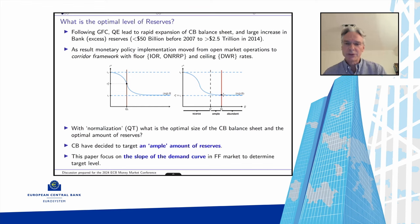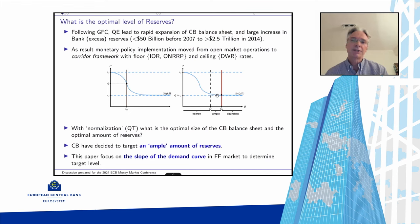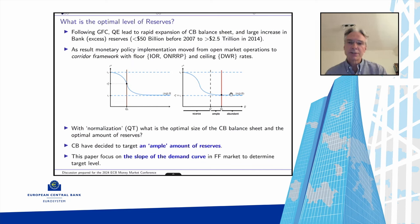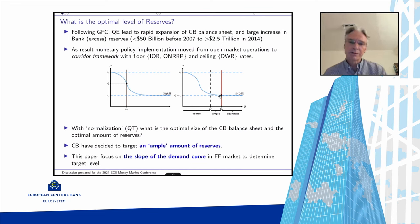Now we're in QT normalization and the key question — discussed from Schnabel's morning session through the day — is how far back to normal should we go. The consensus is not to return to pre-crisis levels, but to maintain some ample level. The problem is we don't observe the full inverse S-shape demand curve; we can't observe it directly. This paper's idea is that the ample level is where the slope of the demand curve is not too steep, and the question becomes how to estimate that slope.